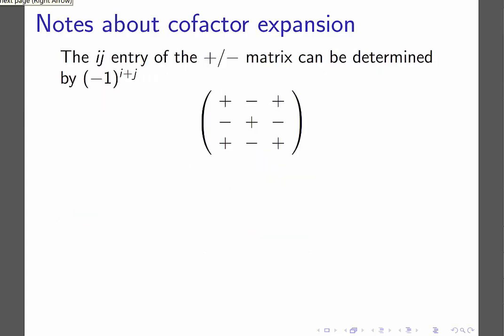When using cofactor expansion, we think about this matrix filled with pluses and minuses. Whether an entry is positive or negative can be determined by the expression (-1)^(i+j). For example, this entry, which I know to be negative, is in the second row and the third column. Adding two and three gives five, and (-1)^5 is negative — confirming it's a negative value. When writing proofs, we'll use this notation to determine sign.